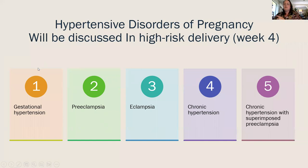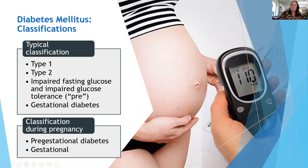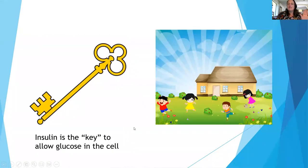Hypertensive disorders will be covered in module four. Regarding diabetes in pregnancy: type 1 and type 2 diabetes persist through pregnancy if already present. Gestational diabetes develops during pregnancy in women who did not have either type before.